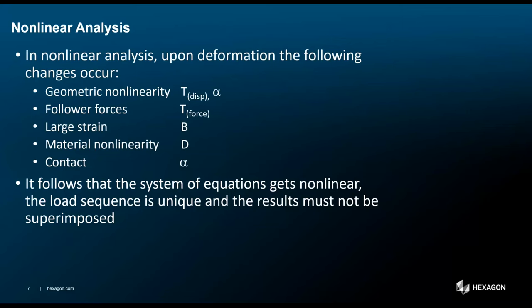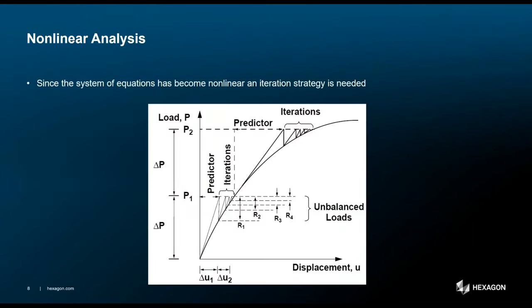In short, K times U still equals P, but K changes depending on the value of U and P. To determine U when K is not constant, we iterate: apply a fraction of the load (delta P), take a guess at K by extrapolating, determine U from the guessed K, and see how far the solution is from equilibrium. We iterate on the stiffness and displacement until achieving a result whose K is consistent with the calculated U and is in equilibrium, then repeat with an additional load increment until all load is applied.